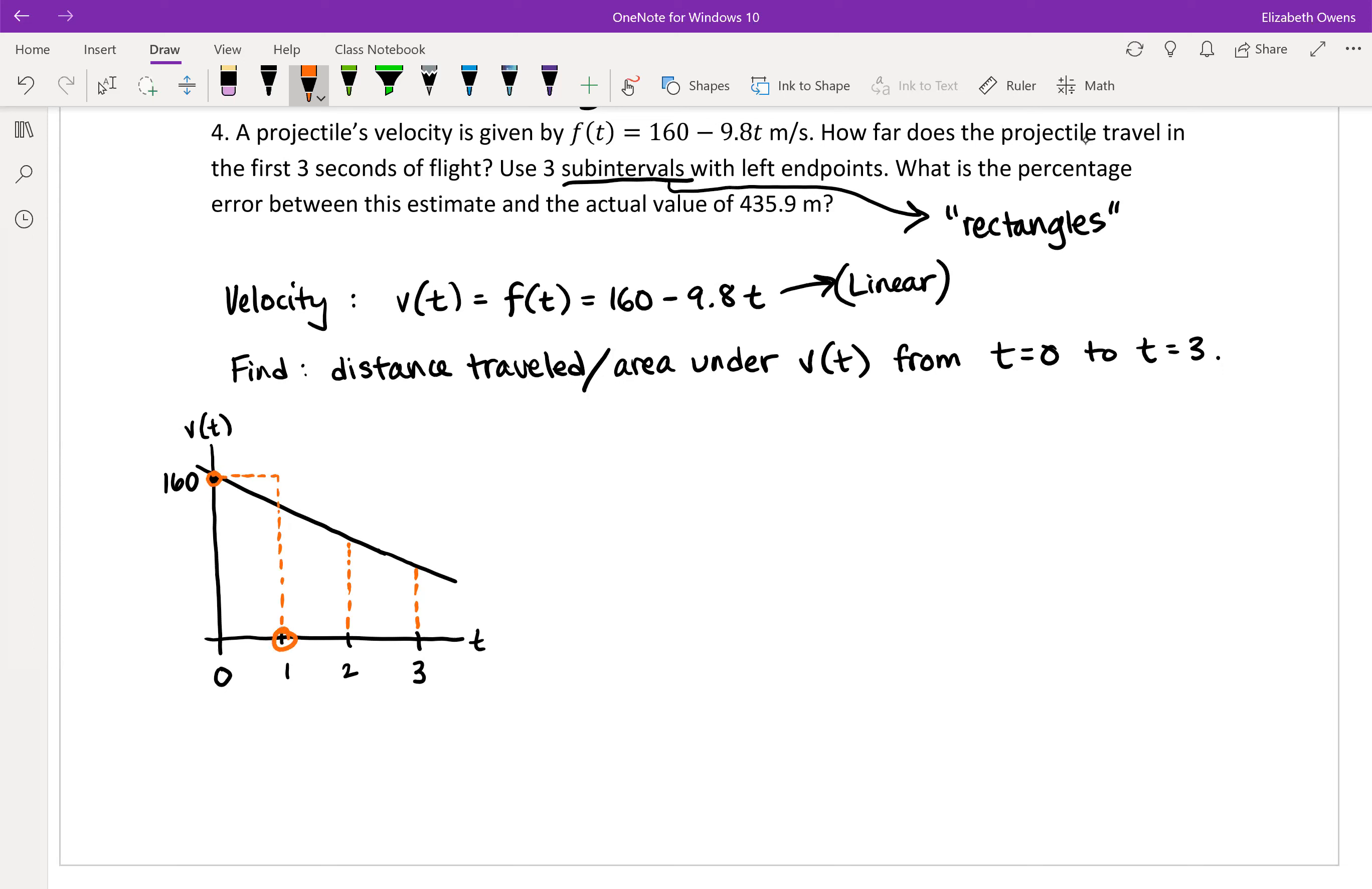Here's your second rectangle, left endpoint, right endpoint. So we're going to work with t equals one to set the height. Okay. And then third rectangle, left endpoint, right endpoint. We end up not using this value at all, t equals three. We don't use it because that's a right endpoint and we want to work with the left endpoint of two to set the height.